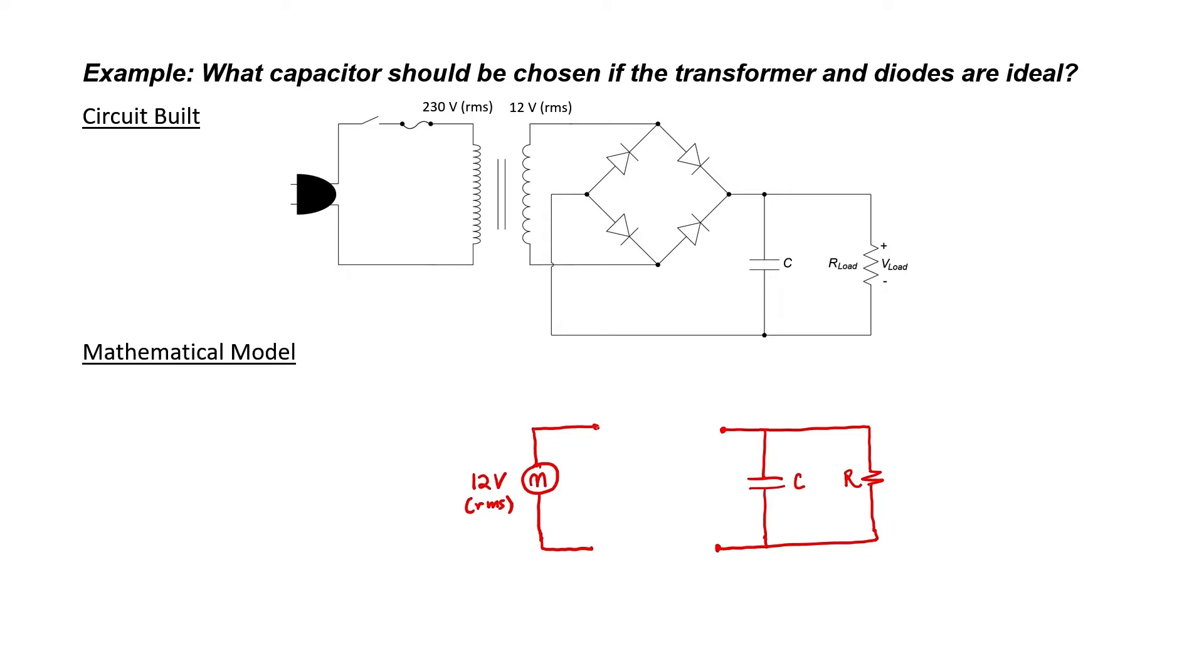Now what do the diodes do if they're ideal? Well since this is a full bridge rectifier, the diodes simply convert any negative voltage into a positive voltage. Therefore, they simply modify the source.